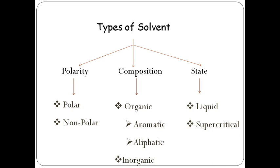Organic solvents are further classified into two categories: aliphatic organic solvents and aromatic organic solvents. Examples of aliphatic organic solvents include N-butane, N-hexane, cyclohexane, etc. Aromatic organic solvents include benzene, toluene, xylene, etc. Inorganic solvents are those in which both carbon and hydrogen are absent — for example, ammonia and HCl.